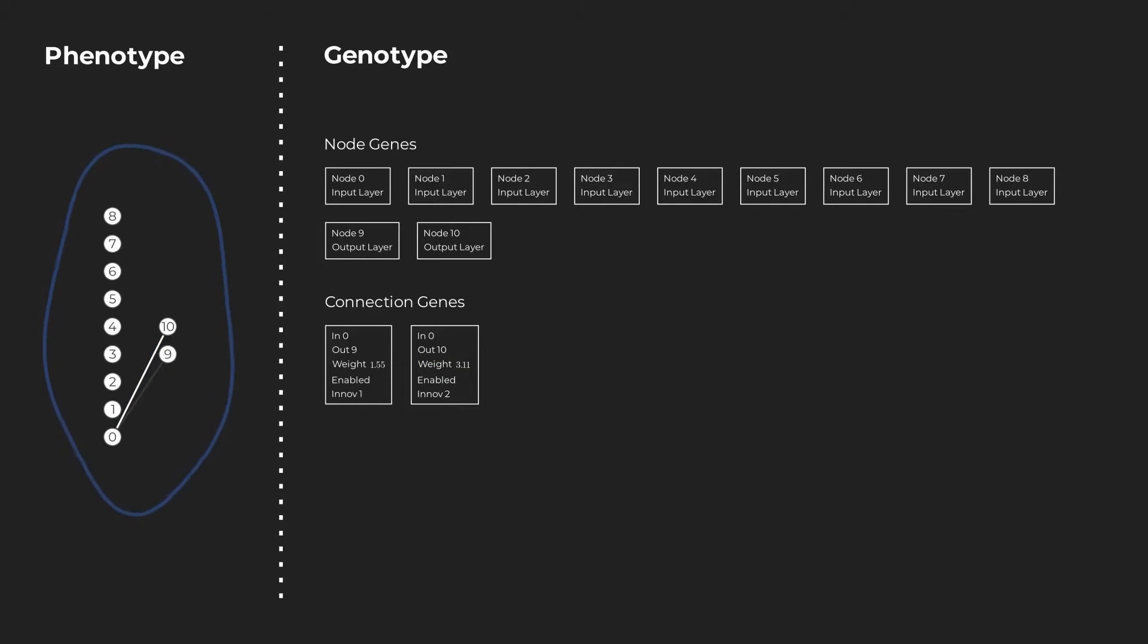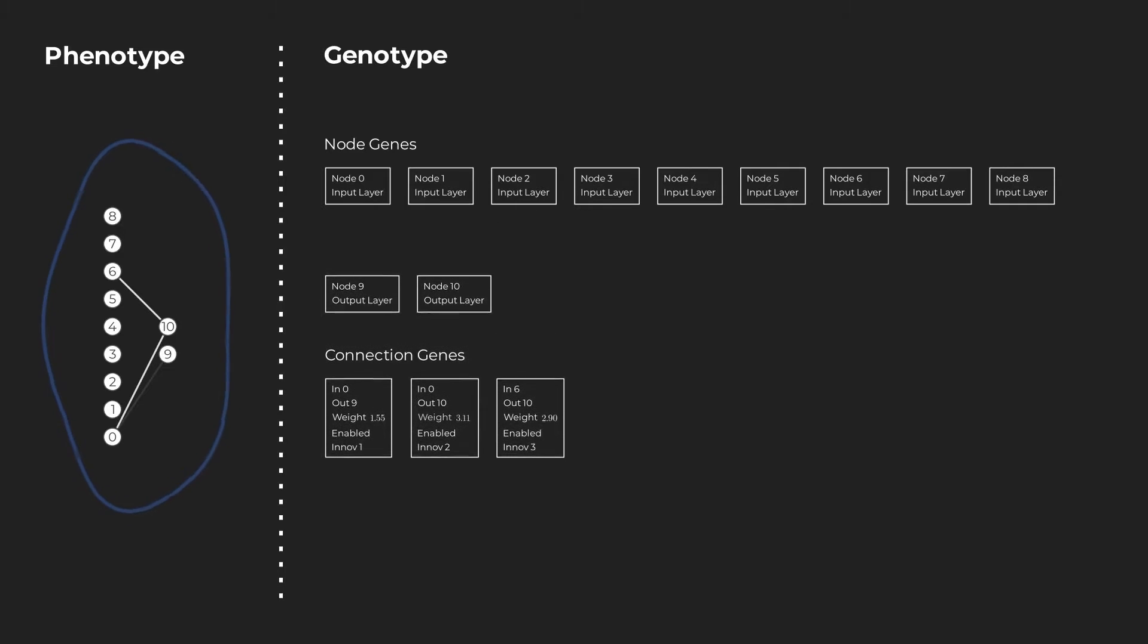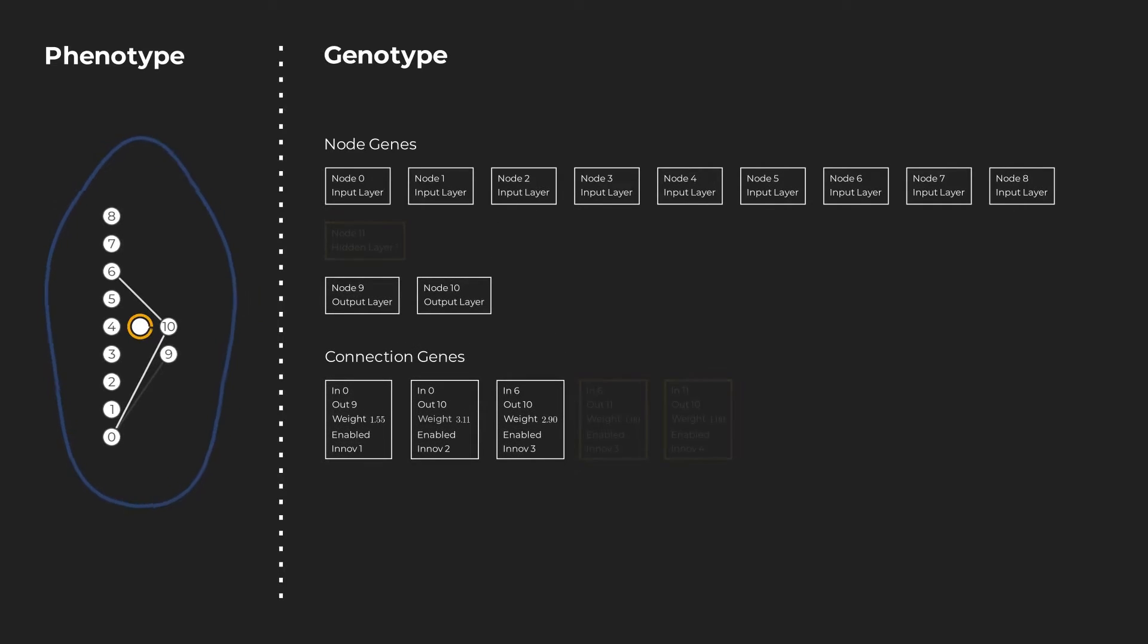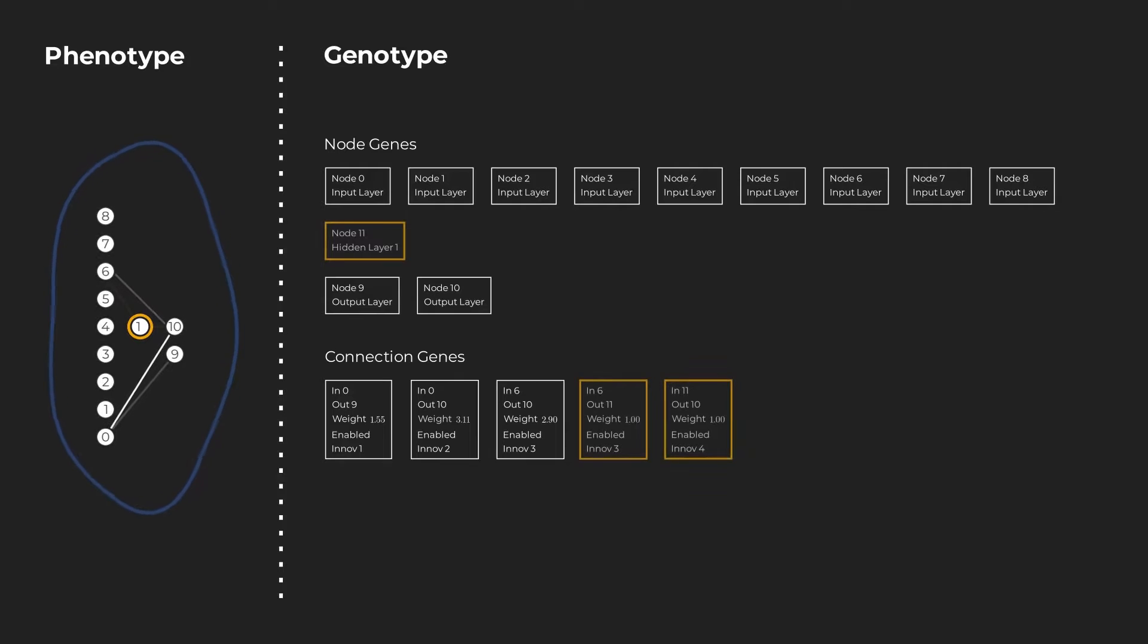The second possible mutation is the addition of a new connection, like the one forming between nodes 6 and 10. A less common mutation in the NEAT algorithm is the creation of a new node. During this operation, a node is inserted into an existing connection, effectively splitting it into two. This mutation happens rarely because the algorithm tries to seek out the most streamlined solution, prioritizing smaller, well-structured networks over bulkier ones.